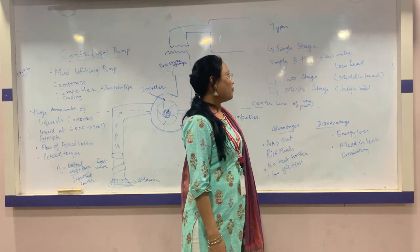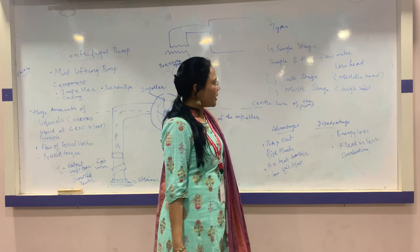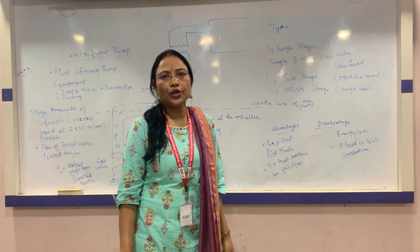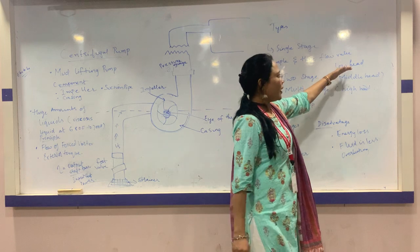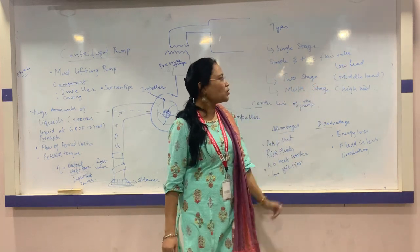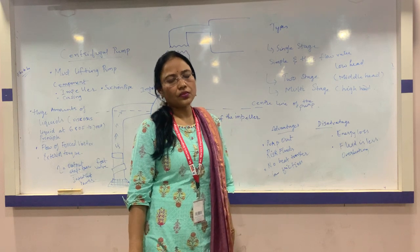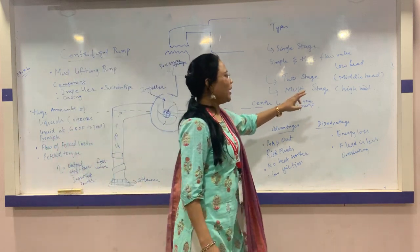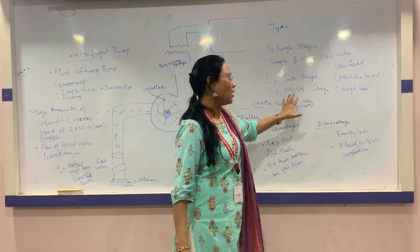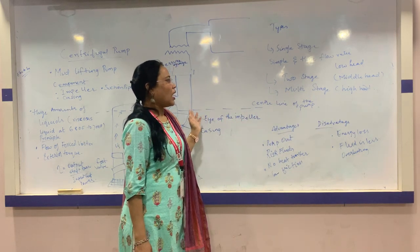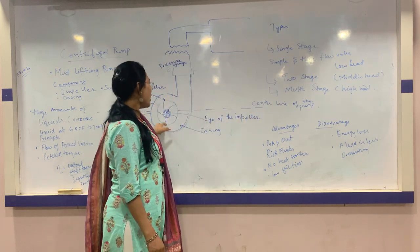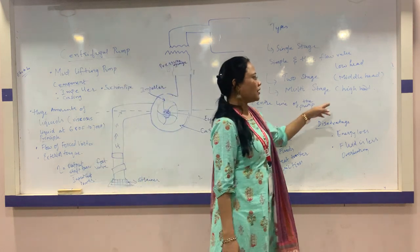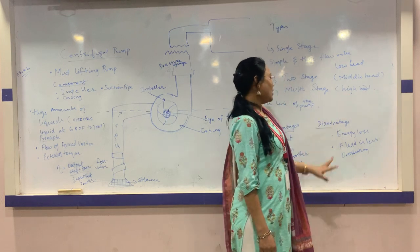The single stage centrifugal pump is very simple and generates large flow rates, but it is suitable only in areas where the available head — the height of water — is low. A two stage centrifugal pump comes with two impellers and is suitable where there is a middle head, that is, a middle height of water available. The multistage centrifugal pump has multiple impellers and can be used where the height of water is very high.